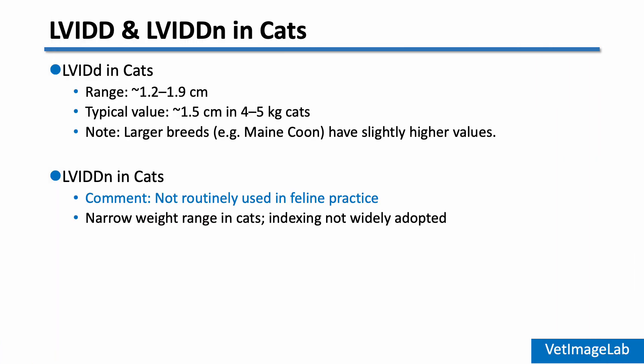In cats, LVIDD usually ranges from about 1.2 to 1.9 centimeters, with a typical value around 1.5 centimeters in cats weighing 4 to 5 kilograms. Larger breeds like Maine Coons may have slightly higher LVIDD values, but the normal range is fairly narrow in the feline population. That's why we don't routinely use LVIDDN in cats — since most cats fall within a limited weight range, indexing isn't widely adopted in clinical practice.